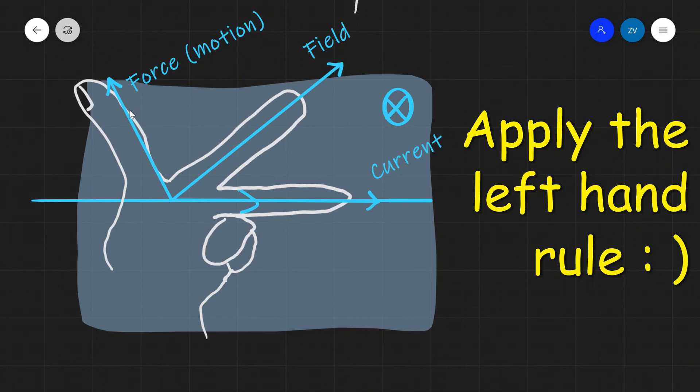In general, anytime we are faced with a left-hand rule problem, what we need to do is some aligning. If we're given the current, we're going to align our second finger with the current, then we need to align our first finger with the field, and then determine where the force is.